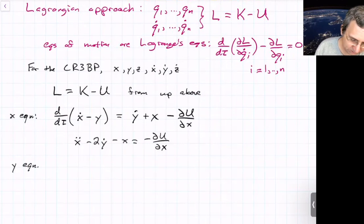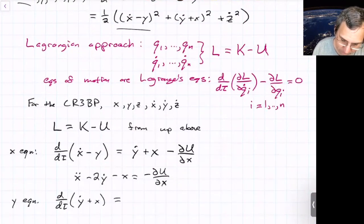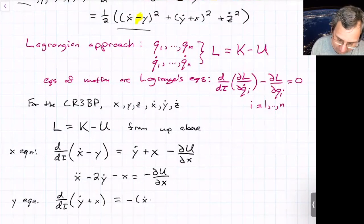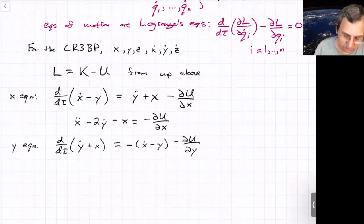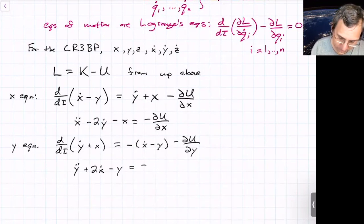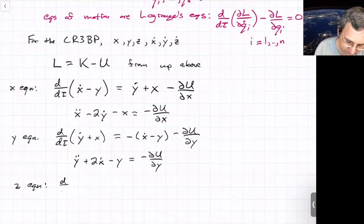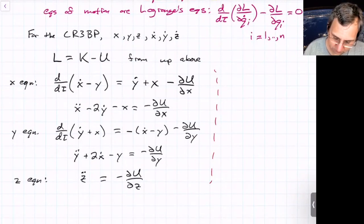If I did the y equation, something similar would happen. D by the tau of, what will it be? y dot plus x equals, because we're taking the derivative of this with respect to y, we'll get a minus sign. So this will actually be minus x dot minus y minus partial u partial y. And so that'll become what you would expect, y double dot plus 2x dot minus y equals minus partial u partial y. And the z equation, pretty easy, just be d by d tau of z dot equals negative partial u partial z. So this is just z double dot.